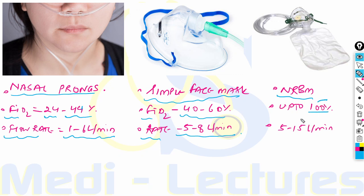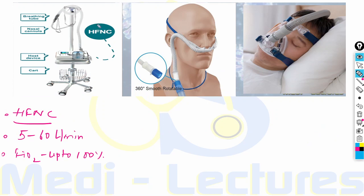The NRBM, also known as the non-rebreathing mask, can theoretically provide FiO2 up to 100%, but practically only up to 80%. The flow rate which can be given is up to 15 liters per minute.